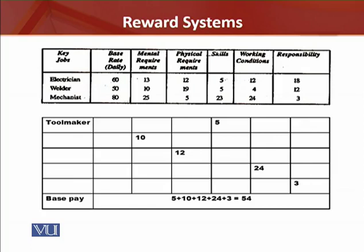For the welder, the relative monetary significance across all compensable factors — including mental requirements worth 10 and so on — adds up to an aggregate of 50. The mechanist's total comes to 80. This means the highest paying job is the mechanist and the lowest paying is the welder.